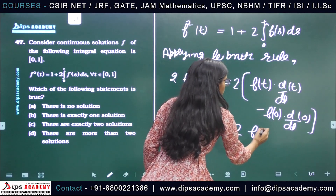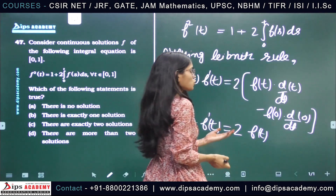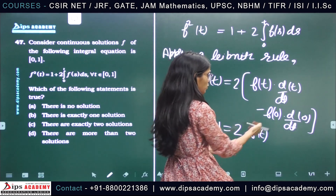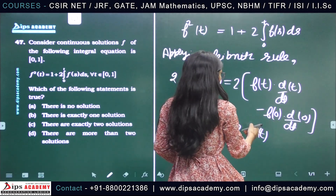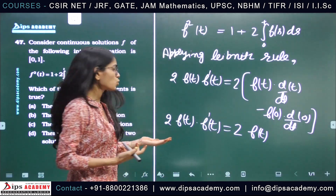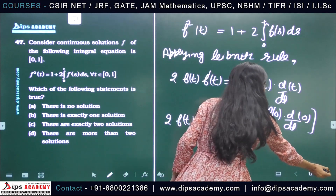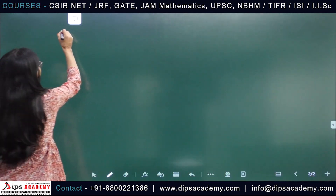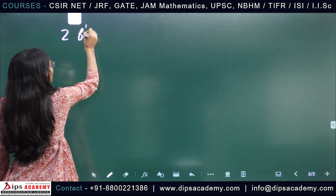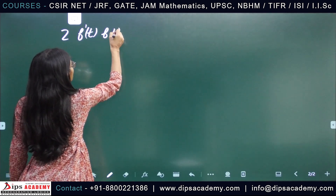The derivative of t is 1, so we get 2f(t)·f'(t) equals 2f(t). The lower limit term is 0. So we arrive at 2f(t)·f'(t) equals 2f(t).